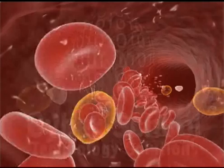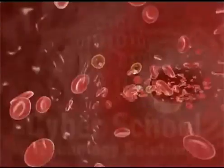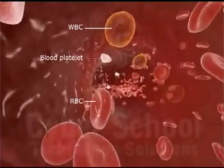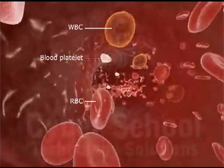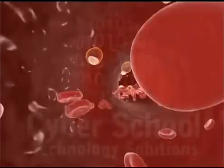Blood is a transporting medium in man. It is a connective tissue where three types of blood cells — RBC, WBC and blood platelets — float in a liquid matrix called plasma. Plasma has dissolved minerals in it. The RBCs contain hemoglobin which transports oxygen from the lungs to the various parts of the body.